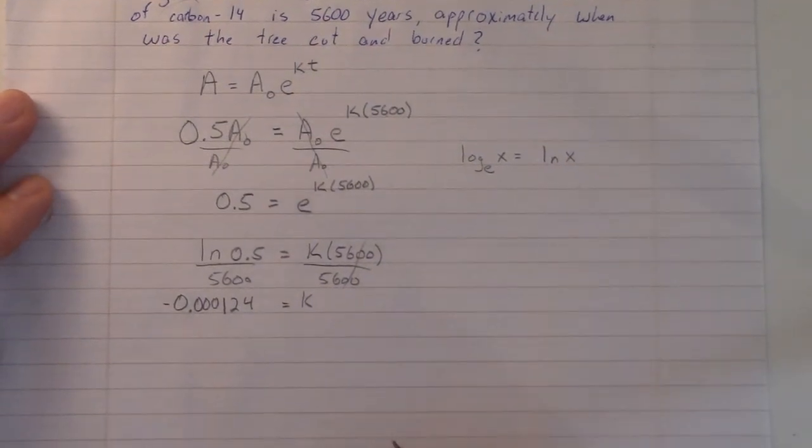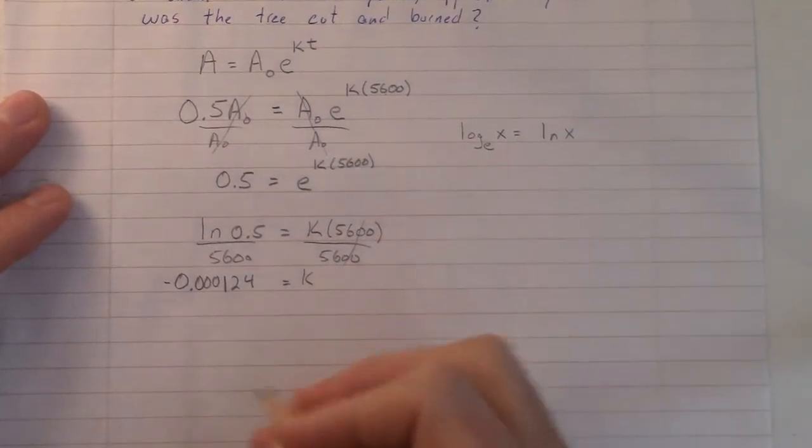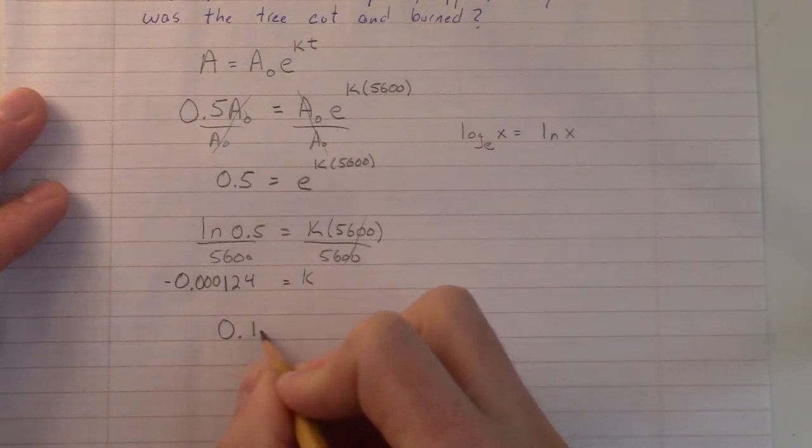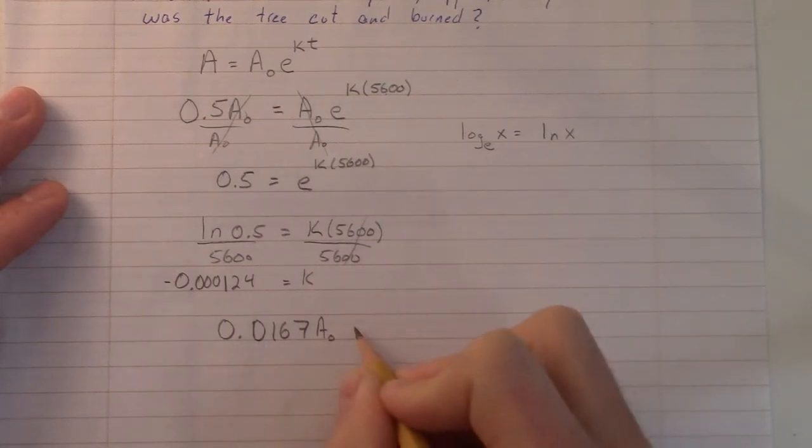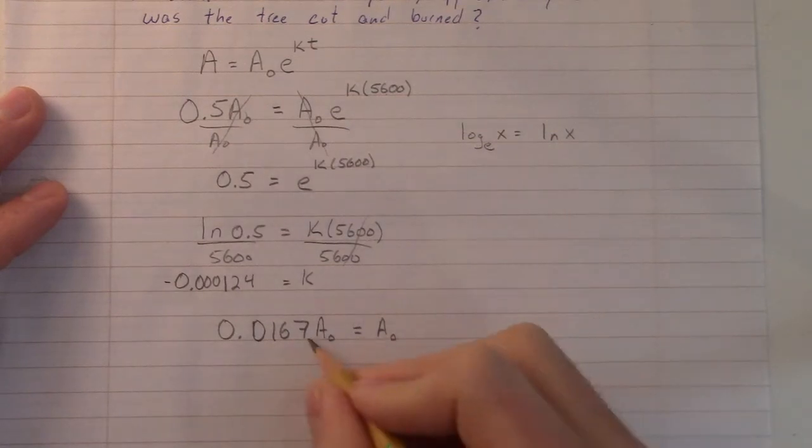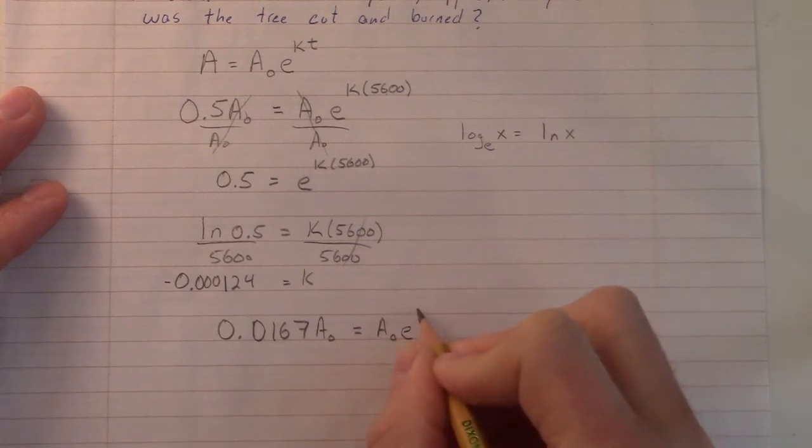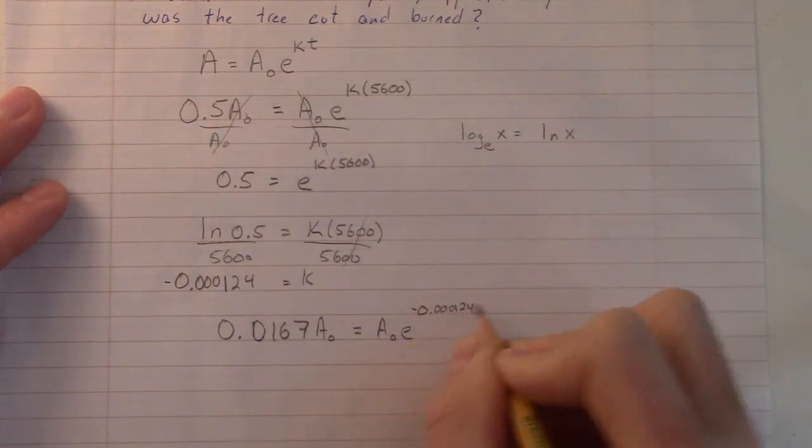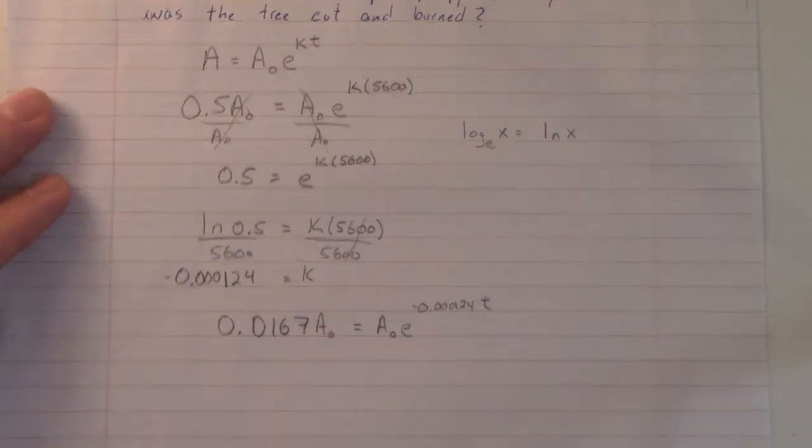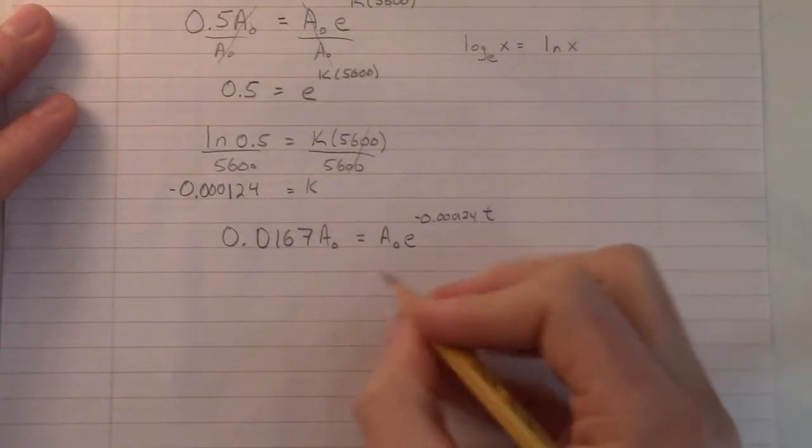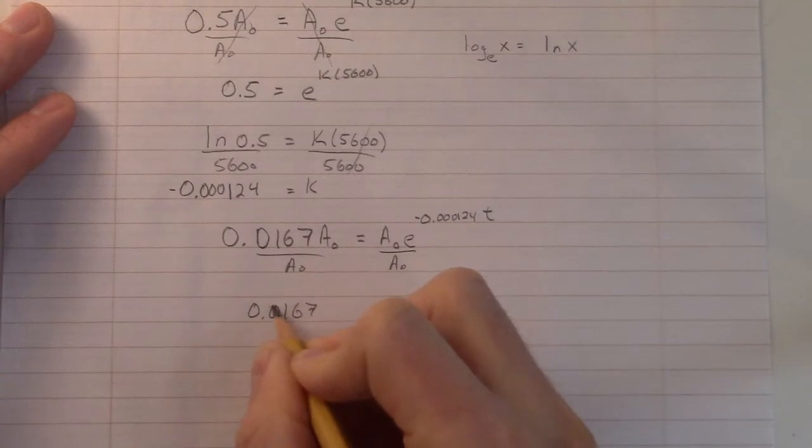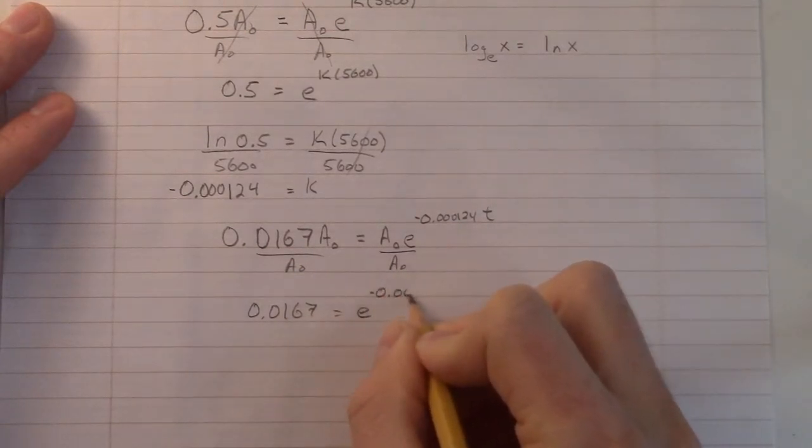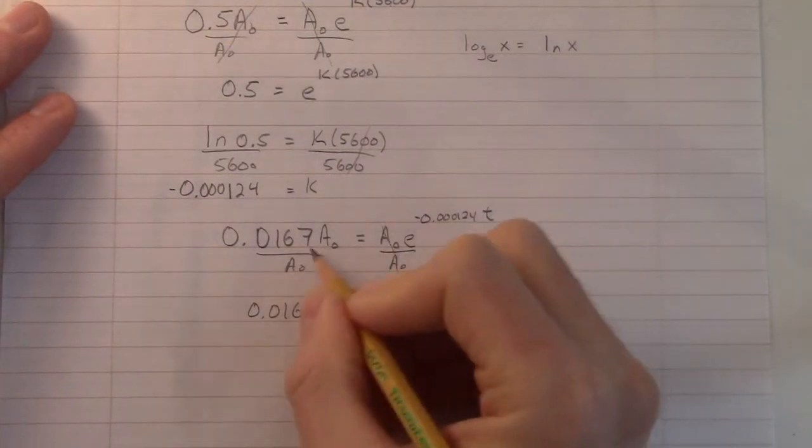Now that we have the decay rate, we know how quickly carbon-14 is disappearing. And that helps us solve this problem because we know that they found 1.6% of the original amount. So, this should be, that is 1.67% as a decimal. That times the original amount. That's how much they found. This much of the original amount. I don't know how much of the original amount there was. So we're using A₀ to represent that. But now I know the decay rate. I just found that. And I don't know time. I want to know when the tree was cut and burned. So from here, I'm going to solve for t in the same way I solved for k. It's all the same steps.